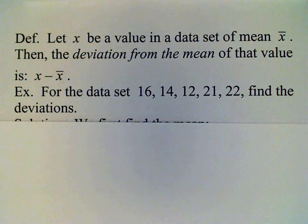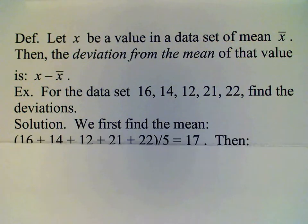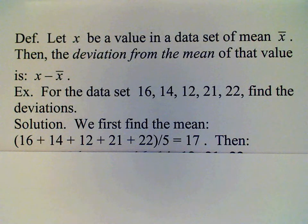For example, we have a data set 16, 14, 12, 21, and 22. We want to find the deviations. So the first thing we need to do is calculate the mean. You know how to do that. We add up the data values. In this case, there are five of them, so we divide the total by five.